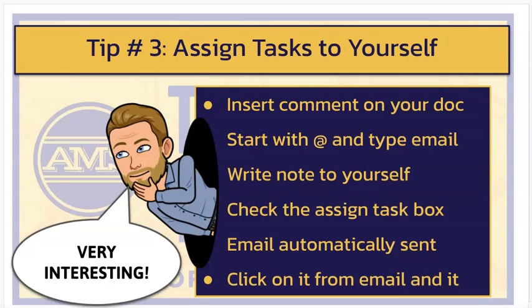Tip three is to use the comment feature and the @ symbol to assign tasks to yourself. When you're working in a Google Doc or Slide, if you insert a comment and start with the @ symbol and begin typing your email address, it will populate and allow you to assign a task to that person. This also works with group projects — you can assign something to one person and something to another. But I often use it to assign something to myself, because you then get an email sent to you automatically that, when you click on it, brings you directly to the spot in the document where you left off.